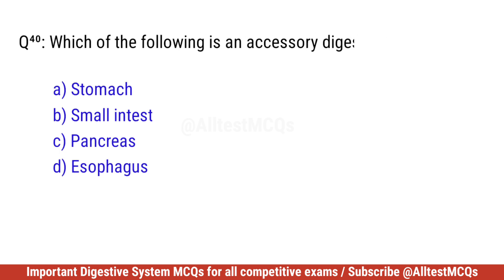Question number forty. Which of the following is an accessory digestive gland? Correct option is C. Pancreas.